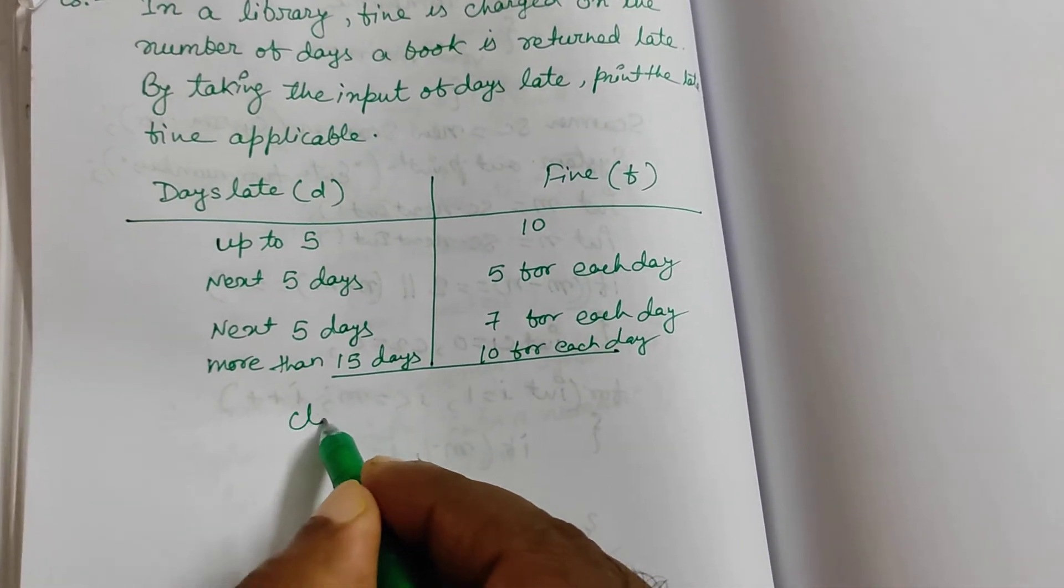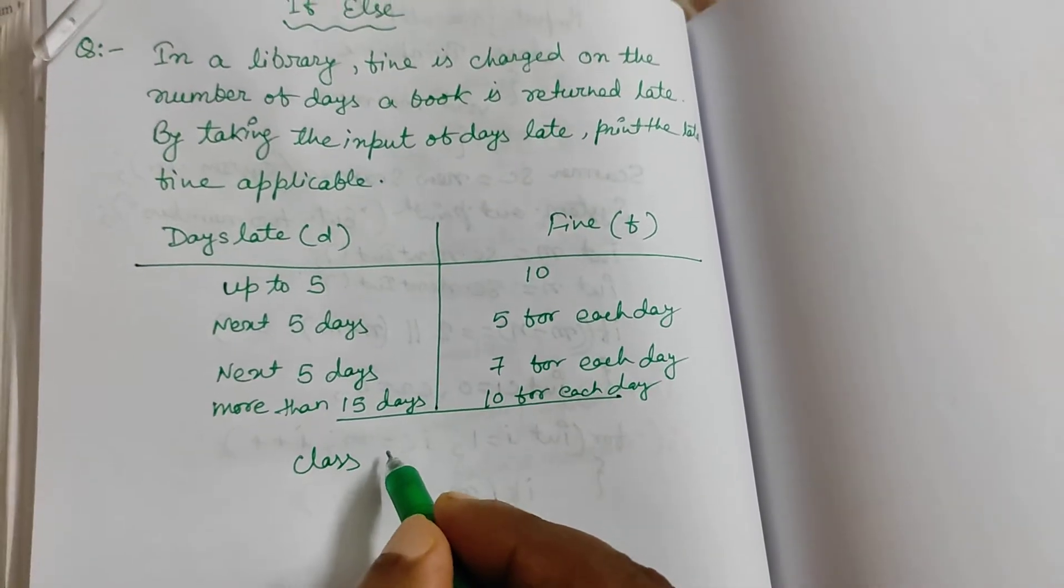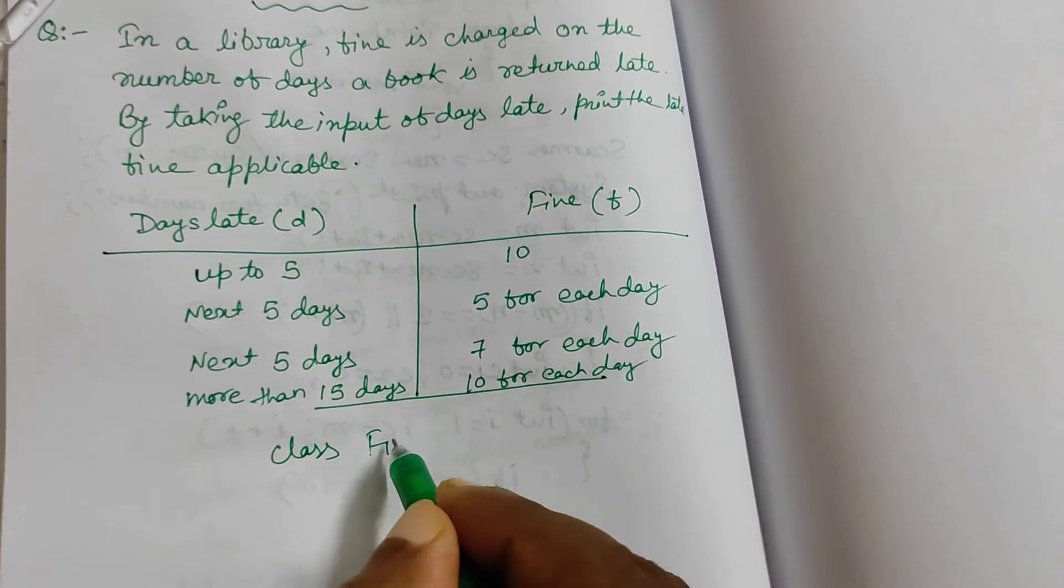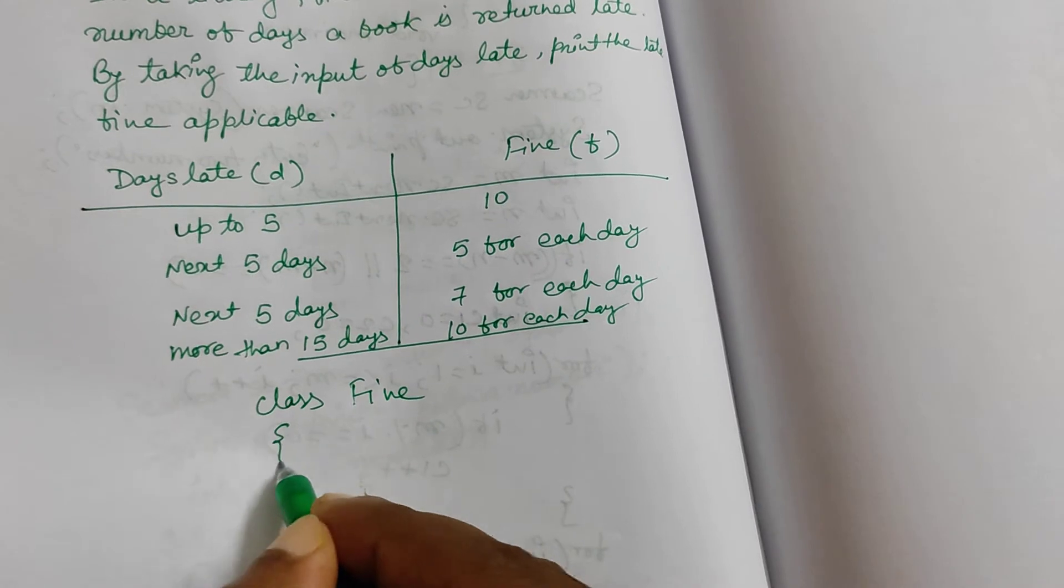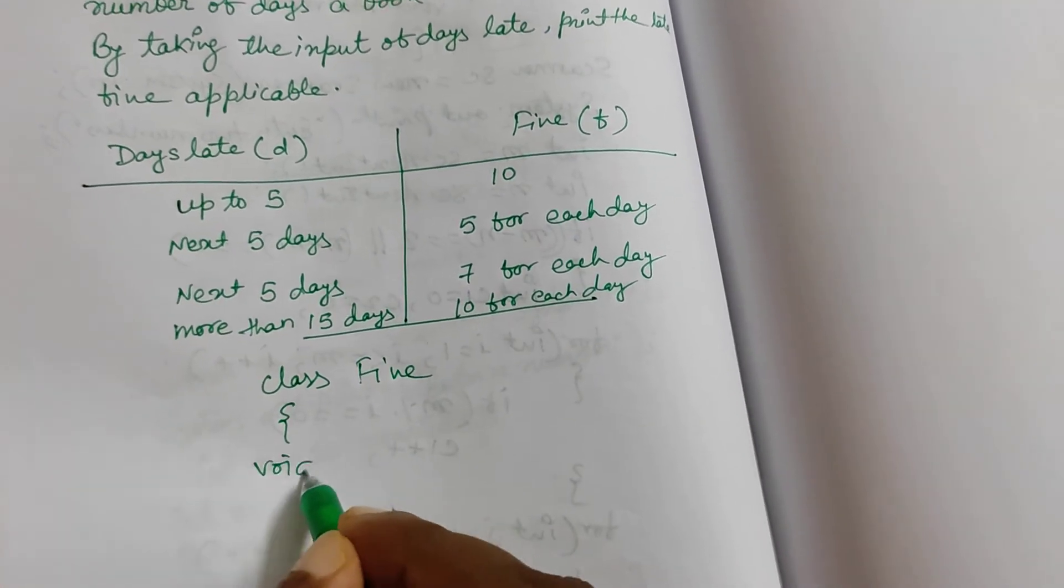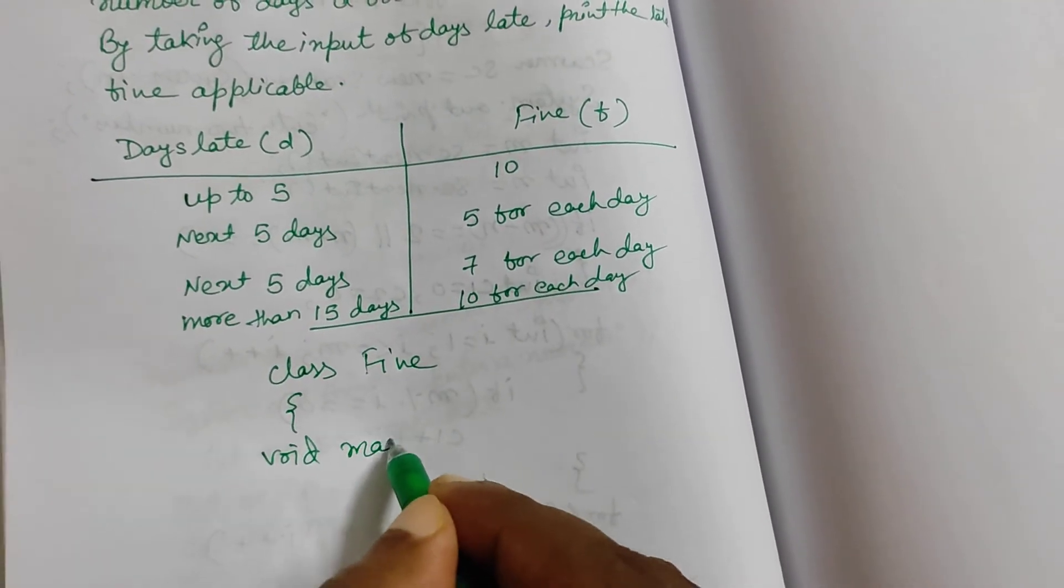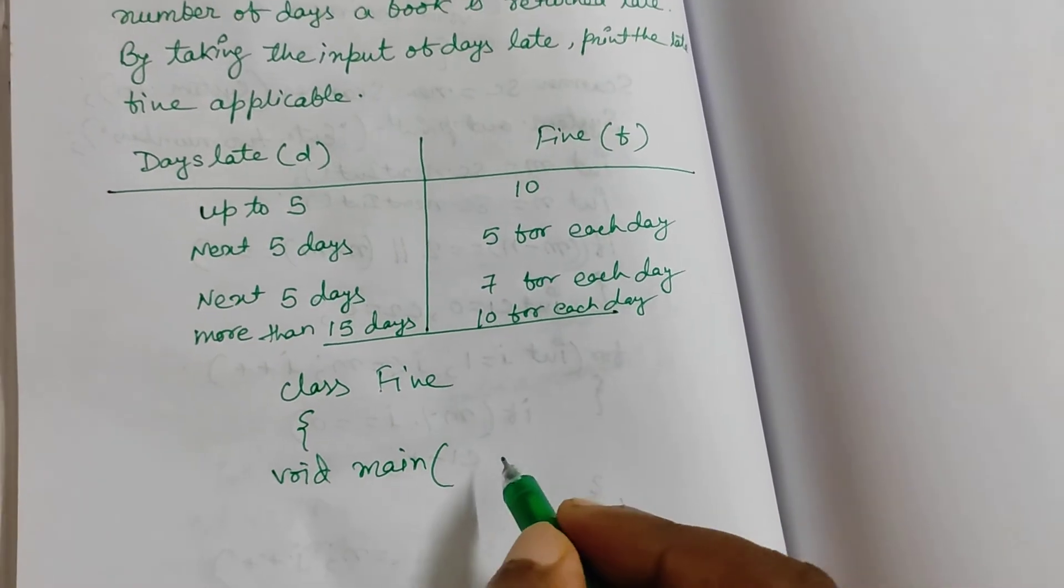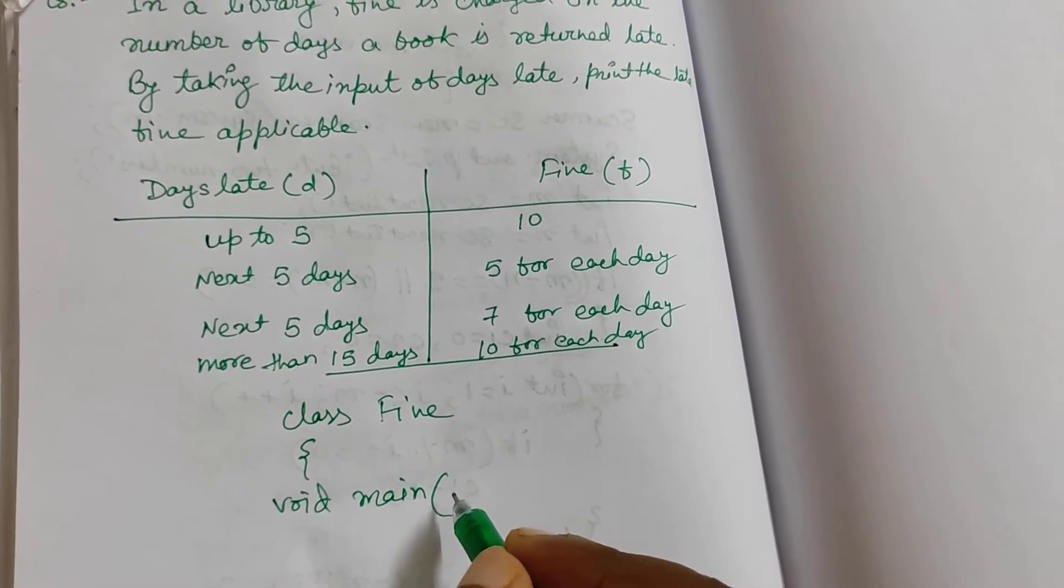So we are starting with class, suppose class is fine, then void main. So public static also you can write, otherwise directly you can write void main. Void main, here what we will take,